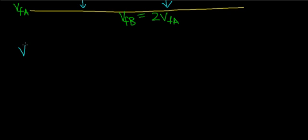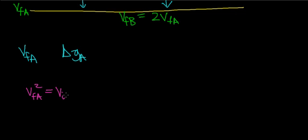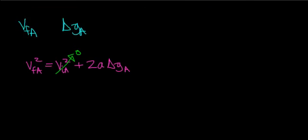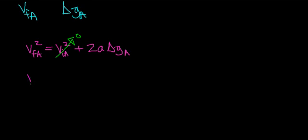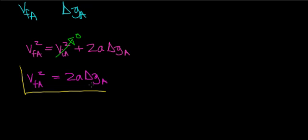First, I want to find a general relationship between the final velocity of object a and the height that it falls. So: v_final_a² = v_initial_a² + 2g·Δy_a. Since the initial velocity is zero, this simplifies to v_final_a² = 2g·Δy_a. This will be one of my important equations, so I'm going to box that.